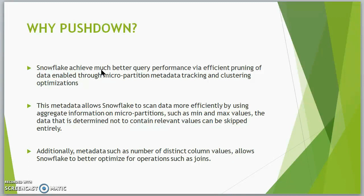In micropartitioning, by default each micropartition will have around 50 to 500 MB of uncompressed data. This reduces skewness by keeping a small amount of data in each micropartition and reduces irrelevant data being scanned by Snowflake. Additionally, similar to cost-based optimization in Hive where table stats are collected to optimize query performance, Snowflake scans data efficiently using aggregate information on micropartitions — such as minimum and maximum values of respective columns and the number of distinct column values. This helps to perform joining operations and complex operations in Snowflake.